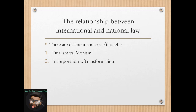How does international law relate to and interact with our national law or municipal law? There are different concepts to consider. We have the dualism and monism concepts. The dualist approach views international and national laws as two distinct, separate systems that exist independently of one another. This theory is based on the assumption that international law and municipal legal systems constitute two distinct and formally separate categories of legal orders — because they differ as to their source, the relations they regulate, and their legal content. Therefore, these two systems are seen to be firmly independent from one another and neither can claim supremacy.